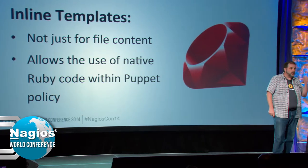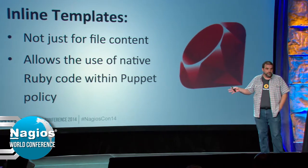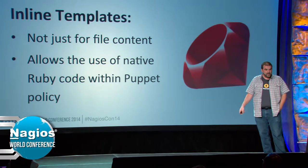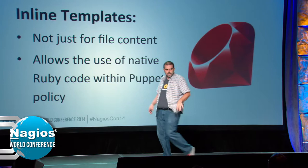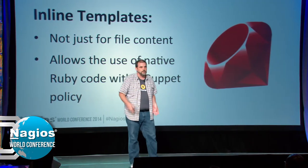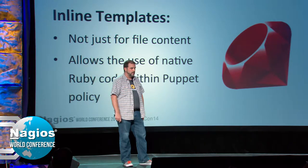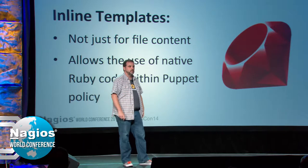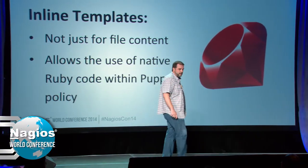Inline templates are a function available in Puppet code and a great way to create short files or add a line or two to an existing file. They're also handy because Puppet doesn't have some of the advanced string and array manipulation available in native Ruby. Inline templates let you sneak little snippets of native Ruby code into your Puppet policy to get around those limitations. You'll see an example of that later.